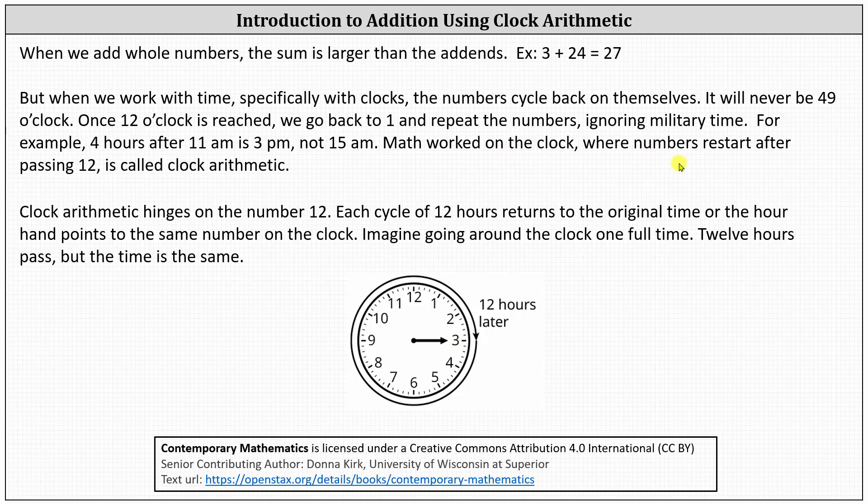Math worked on the clock where numbers restart after passing 12 is called clock arithmetic. Clock arithmetic hinges on the number 12. Each cycle of 12 hours returns to the original time, or the hour hand points to the same number on the clock. Imagine going around the clock one full time. 12 hours pass, but the time is the same.